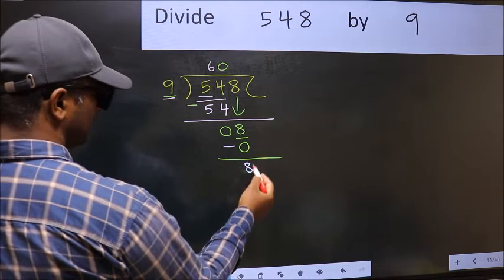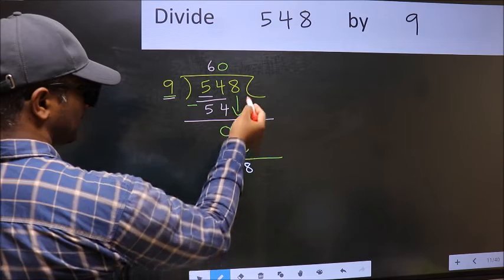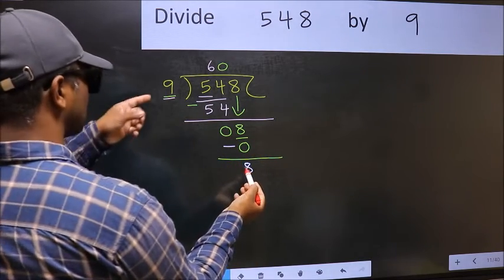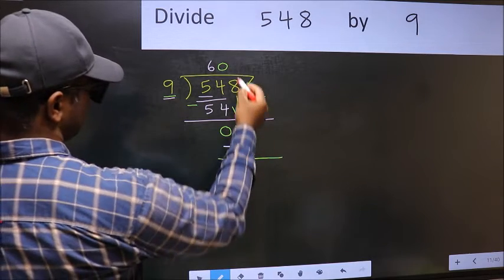Now you should subtract 8 minus 0, which is 8. Over here we did not bring any number down, and 8 is smaller than 9.